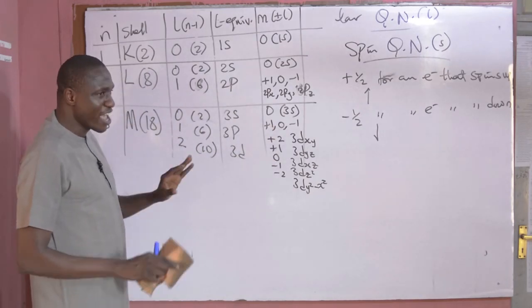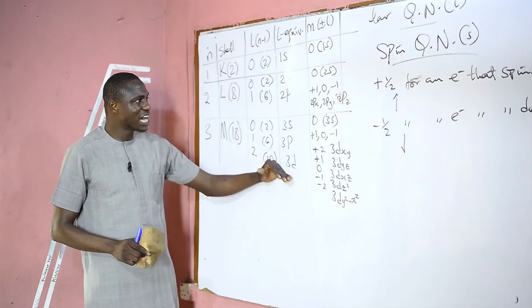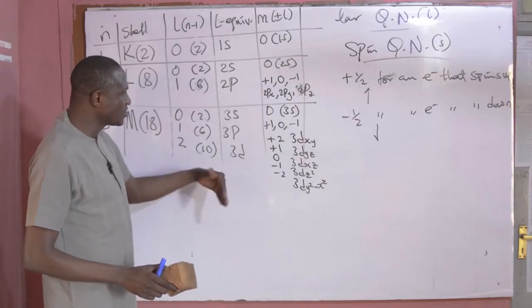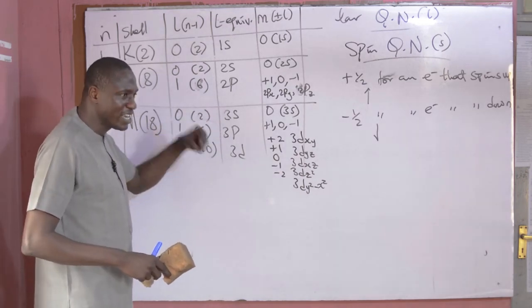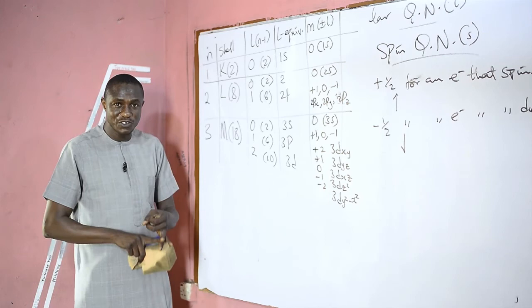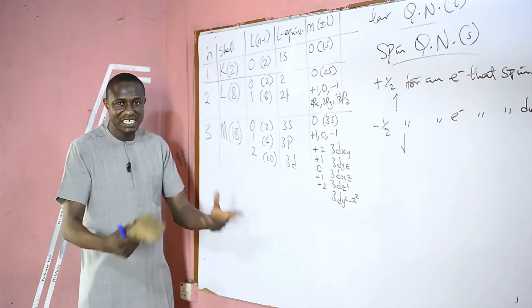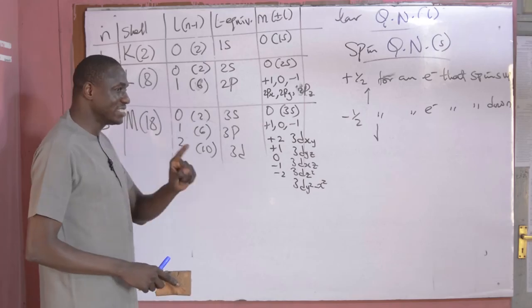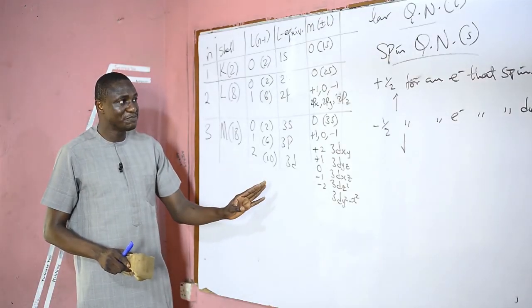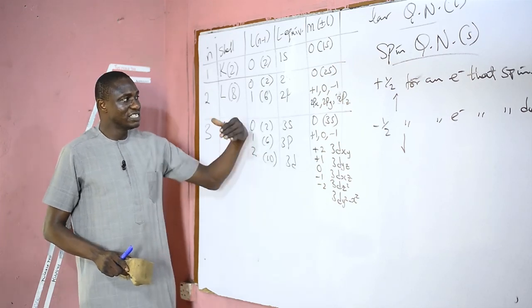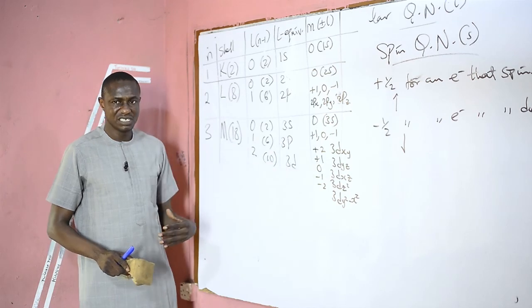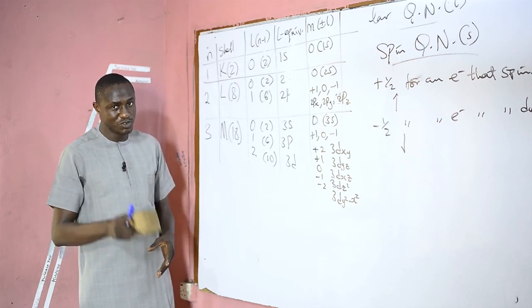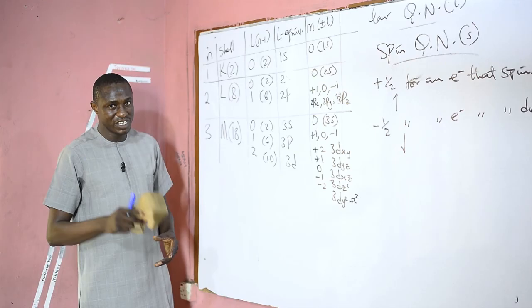These are the four quantum numbers. In our next episode, we are going to look at how electrons are arranged in an atom based on the four quantum numbers — the ordering of orbitals. We are also going to look at how you can determine from the electronic configuration of an element the period, the group, the block of that element, and the valence electrons, as well as the various theories or laws that govern the arrangement of electrons in an atom or in various orbitals. Thanks for listening; do not forget to subscribe to our YouTube page.